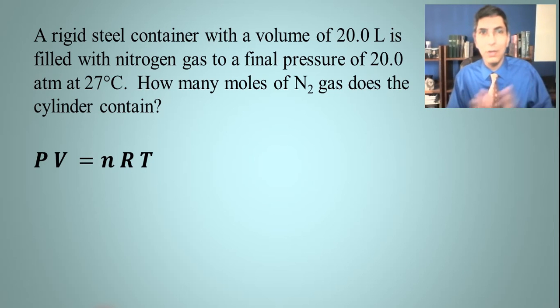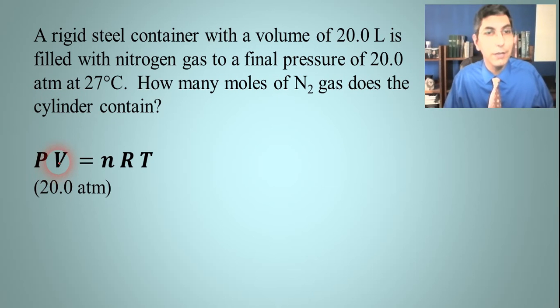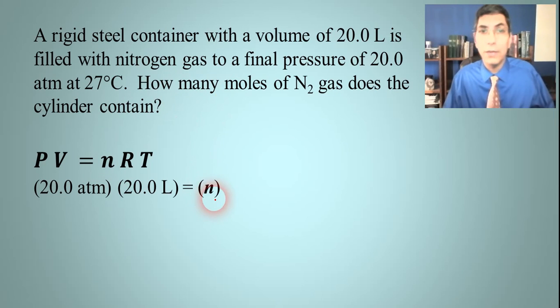We have to plug these in. P is for pressure and that's 20 atmospheres. V is for volume and that is 20 liters. n is moles and we don't know what that is - it says how many moles - so I'm going to leave that as my unknown.